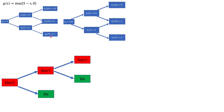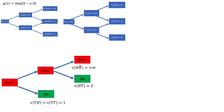Once you're at that node, the optimal thing is to exercise right away. This exercise rule can be expressed as a random variable τ. If you get tail-tail-head or tail-tail, the optimal time to exercise is time one. If you get head then tail, the optimal time is two. And plus infinity means never exercise — so that's what this random variable τ is telling us.